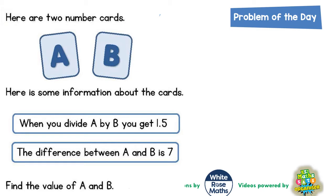Now it might not be immediately obvious what to do at first, so let's try something and see where it takes us. The first statement says when you divide A by B, in other words A divided by B, you get 1.5.